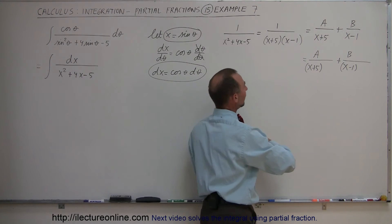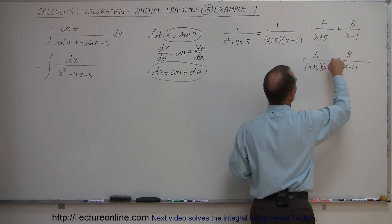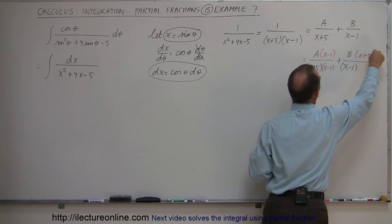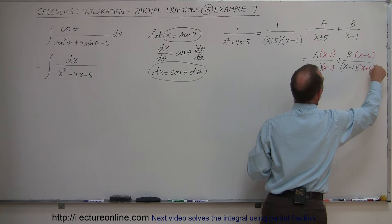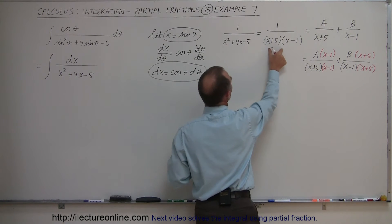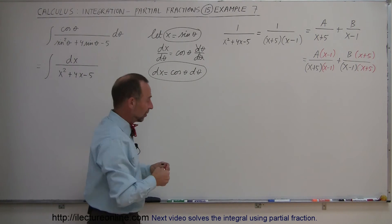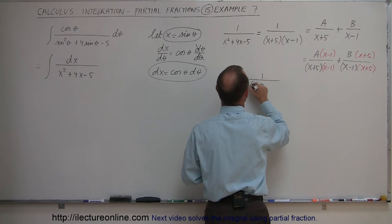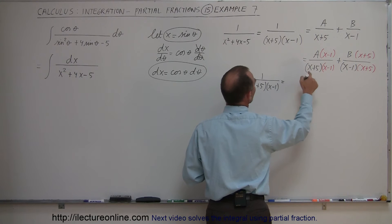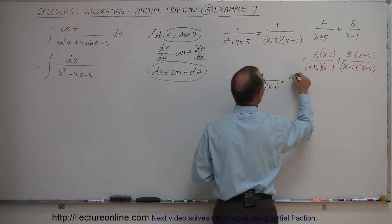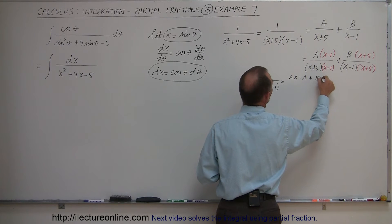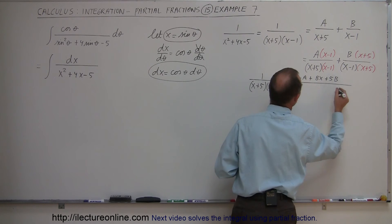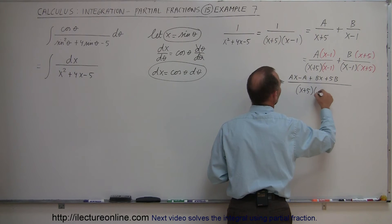We multiply the first fraction by (x − 1) in both numerator and denominator, and the second fraction by (x + 5) in both numerator and denominator. Now all denominators are the same, so we can write 1 over (x + 5)(x − 1) equals (Ax − A + Bx + 5B) divided by (x + 5)(x − 1).